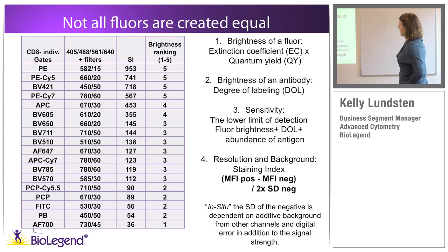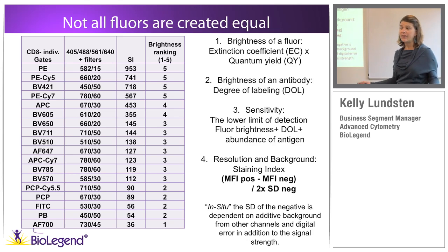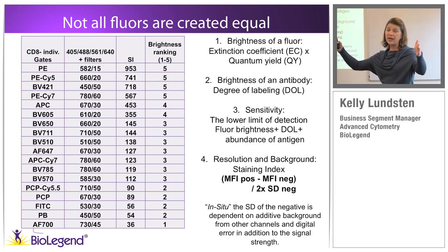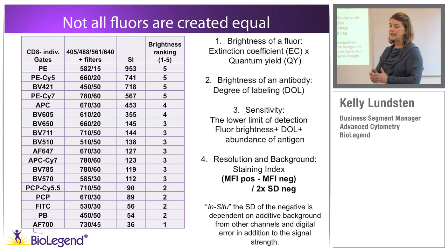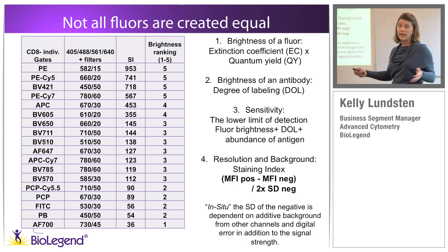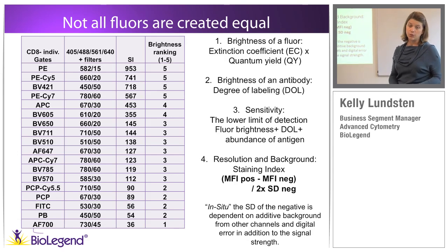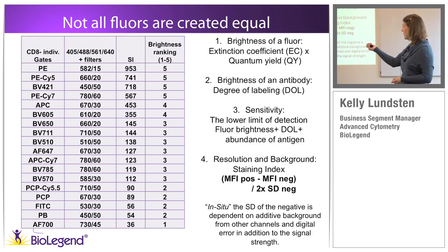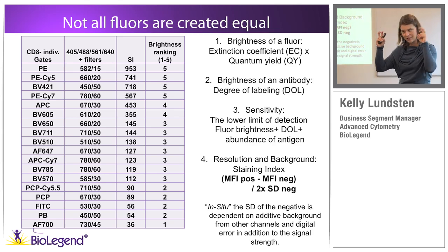Staining index is not just signal to noise — it's equally important to consider the spread of the MFI negative, its standard deviation from the center. Especially in the near-infrared, you'll have a wider spread of the MFI negative as an artifact of the fluorophore's emission. So you take the MFI positive, subtract the MFI negative, and divide by two times the standard deviation of the negative. That's your true indication of signal to noise.